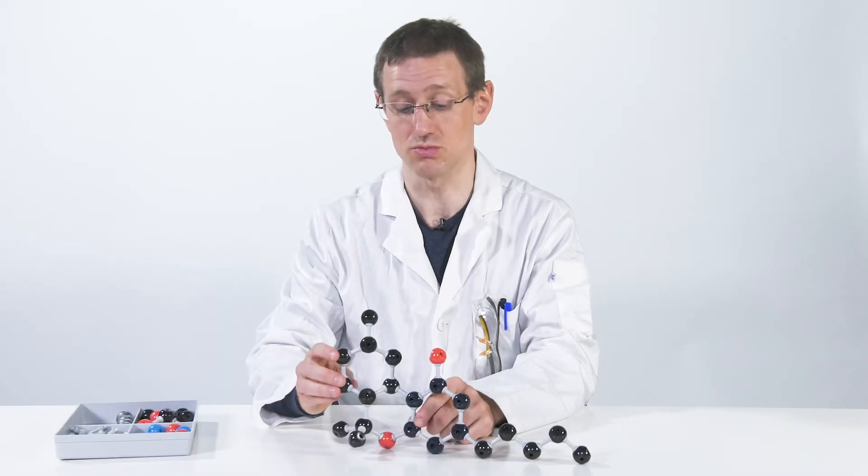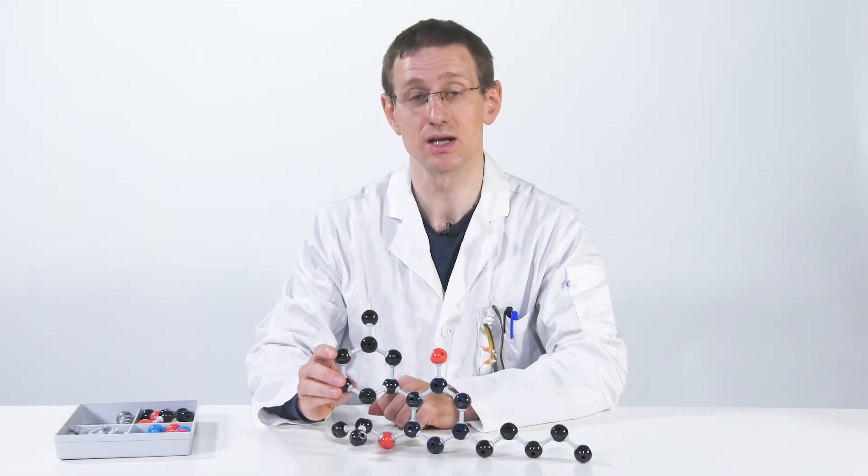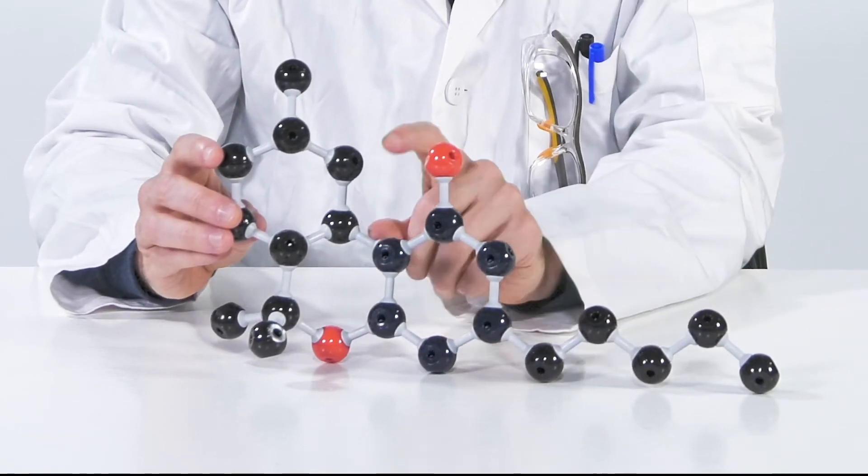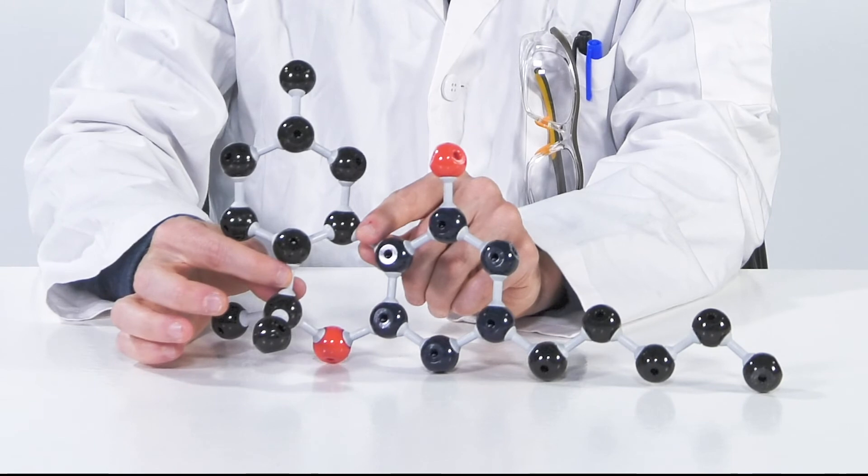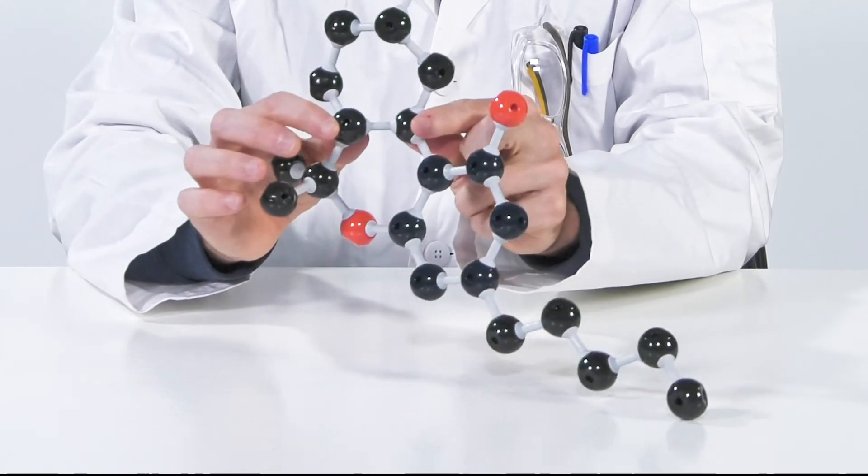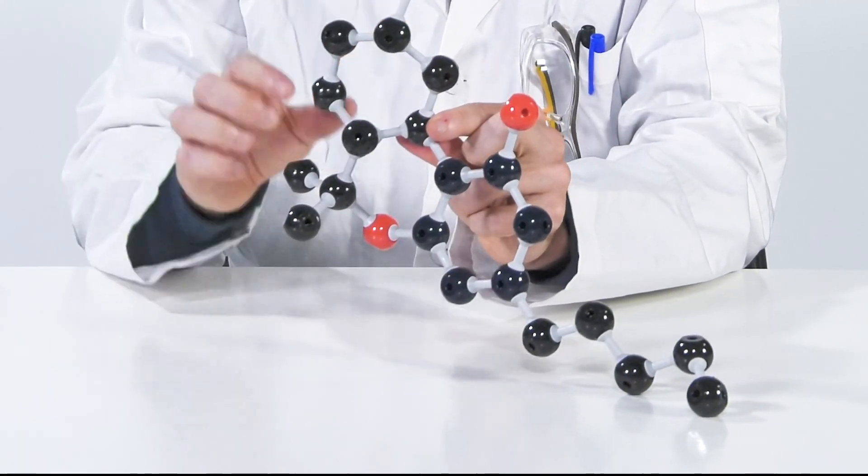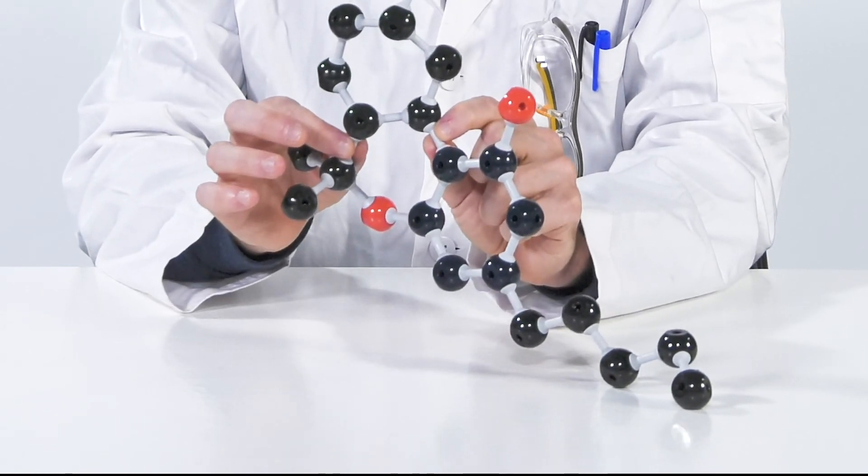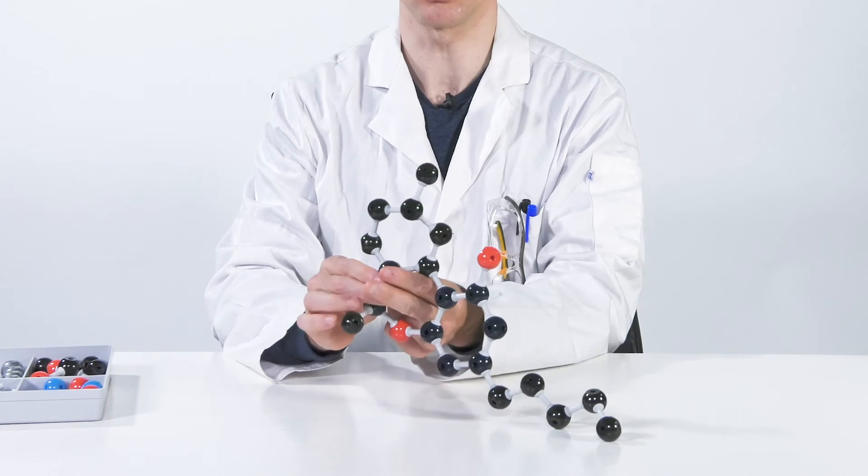And the other part that you might recognize from THC is its trans-delta-9 THC. So the trans comes from this bond and this bond here, where they are, if you look at this hexene moiety, one is forward, one is backward, so that's trans. They could also be cis to each other.